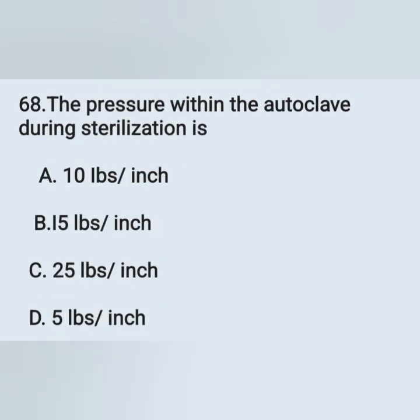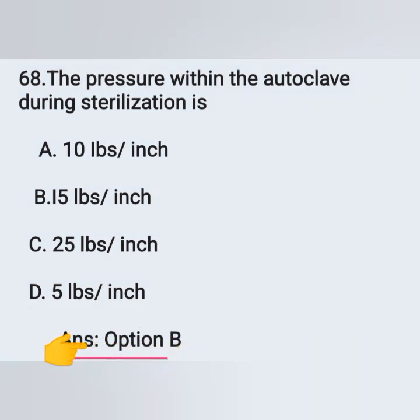Question 68: The pressure within the autoclave during sterilization is: Option A: 10 pounds per square inch, Option B: 15 pounds per square inch, Option C: 25 pounds per square inch, Option D: 5 pounds per square inch. The correct answer is 15 pounds per square inch — Option B is the correct answer.